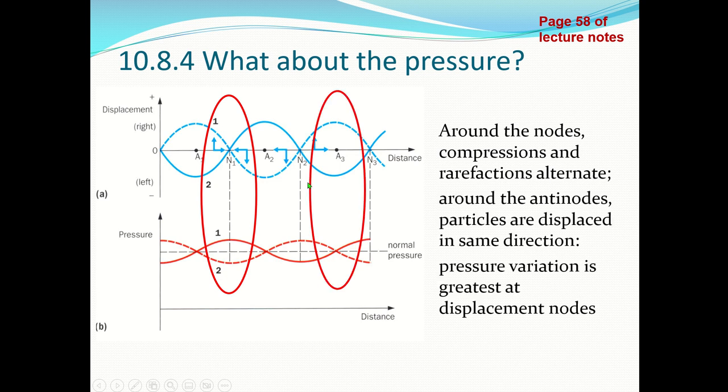On the other hand, around the antinodes the displacement of the particles is always in the same direction. If the displacement is positive, then all particles near the antinodes are displaced in the positive direction, and there is hardly any variation in the pressure.